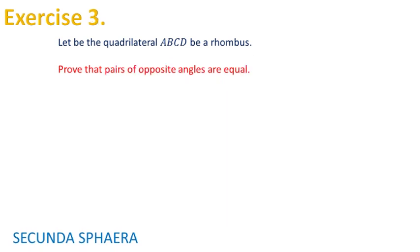After this video it may seem that many properties of the rhombus can be inferred using congruence of triangles. Anyways, the third exercise of this video says let be the quadrilateral ABCD a rhombus.